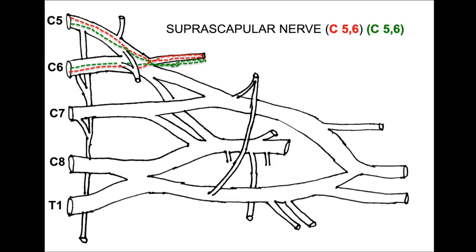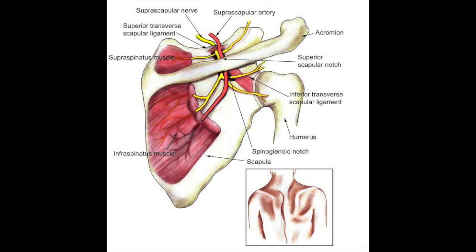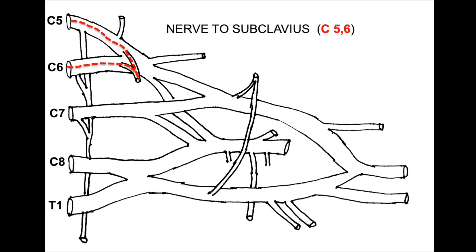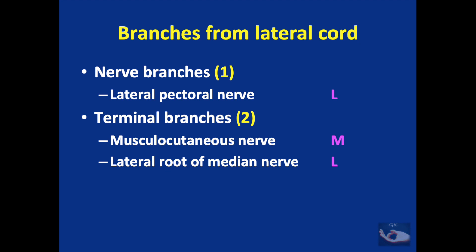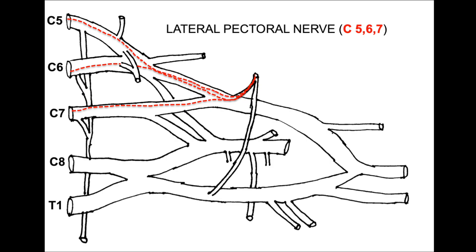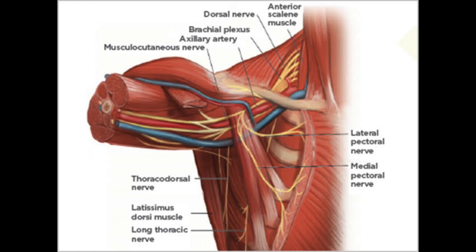The suprascapular nerve arises from the upper trunk with root values C5 and C6. It gives sensory supply to the glenohumeral and acromioclavicular joints, and motor supply to the supraspinatus (which stabilizes and abducts the shoulder) and infraspinatus (which stabilizes and externally rotates the shoulder). The next branch from the upper trunk is the nerve to subclavius, which has only motor supply to the subclavius muscle. From the lateral cord there is one nerve branch — the lateral pectoral nerve — a purely motor nerve with fibers from C5, C6, and C7, supplying the clavicular head of pectoralis major.